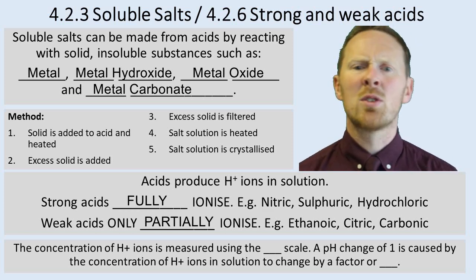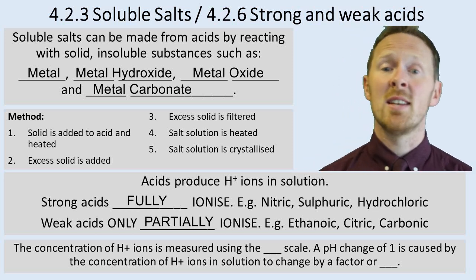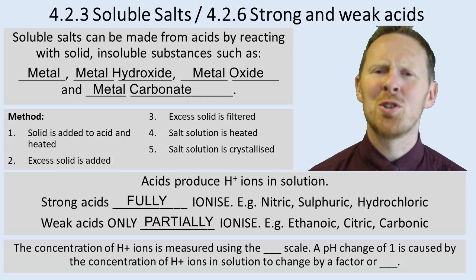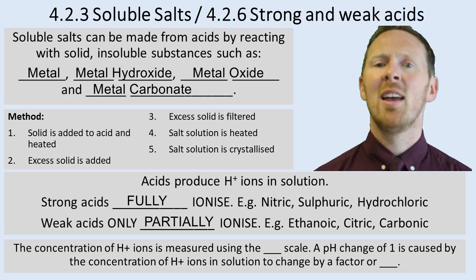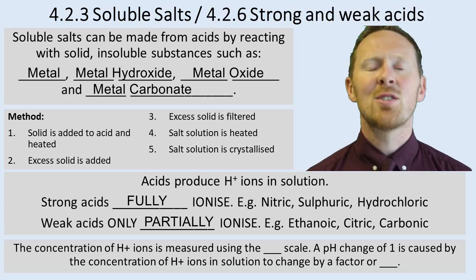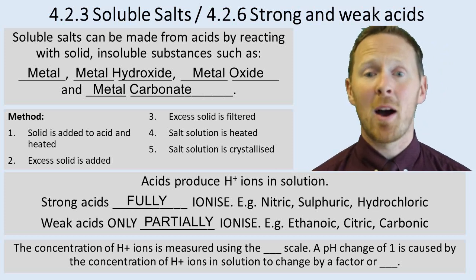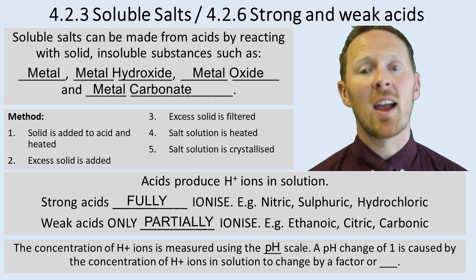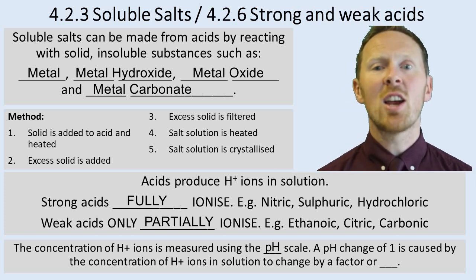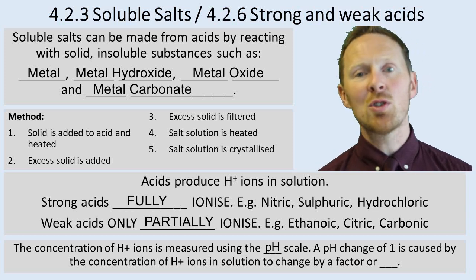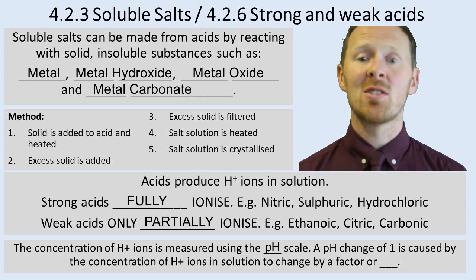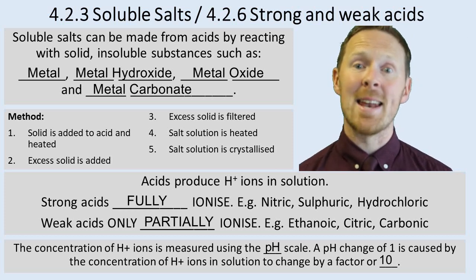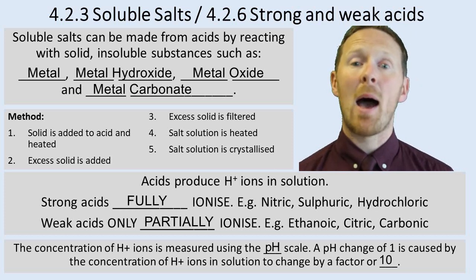We use the words strong and weak, but we also use the words concentrated and dilute. You need to know what concentration means — it's not the same as strong. The concentration of acid particles, that's H+ ions, is measured using the pH scale. A pH change of 1 is caused by the concentration of hydrogen ions in solution changing by a factor of 10, so it's a power scale.